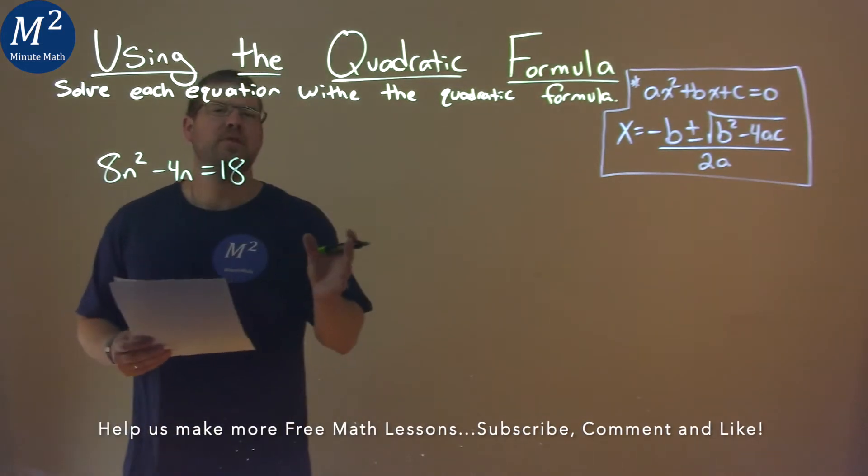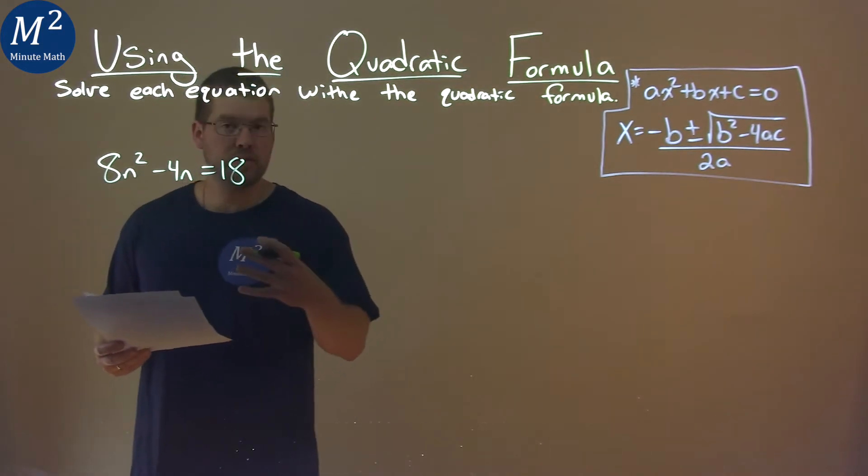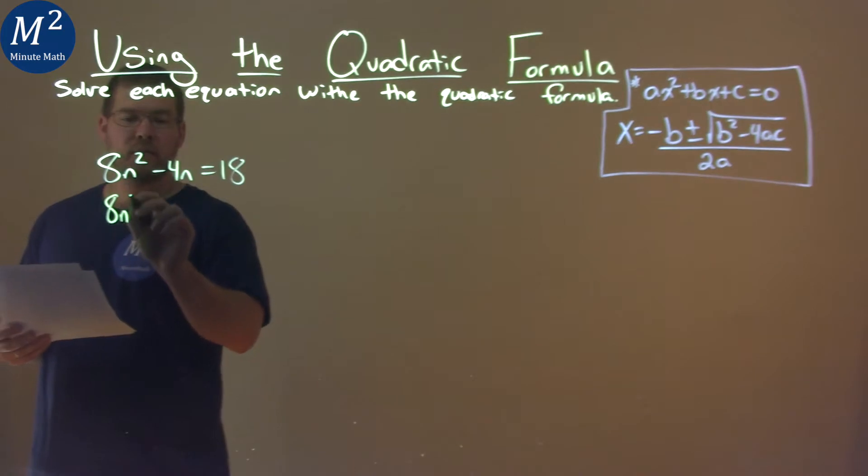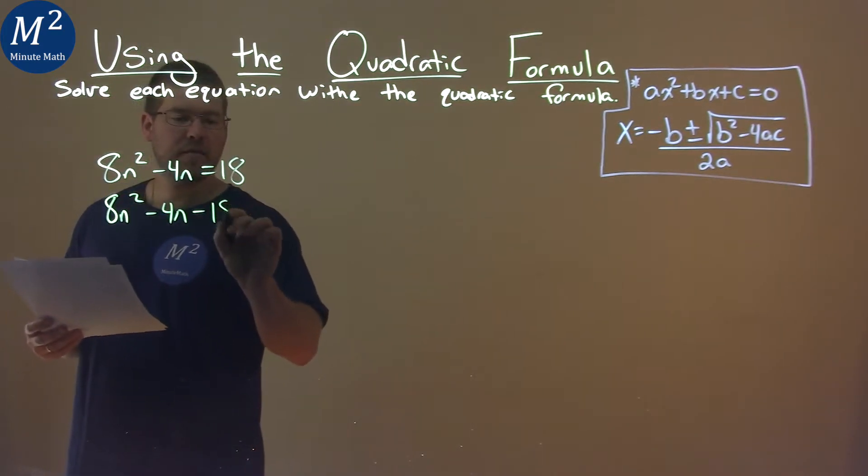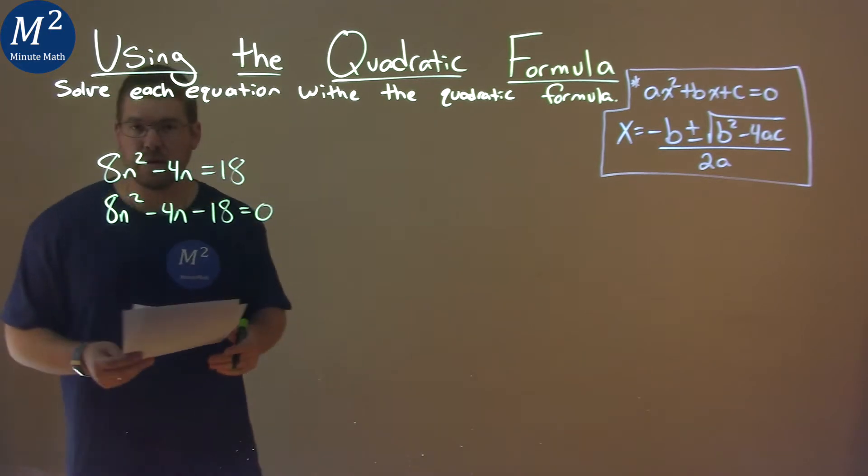First thing I want to do is get everything to the left-hand side so it's equal to zero. 8n squared minus 4n, and I subtract an 18, minus 18 equals zero here.